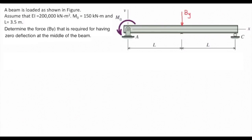Before watching this video, try to solve this problem. A beam is subjected to a moment at the left side and a force acting at the middle of that. The value of the moment at the left side is 150 kNm, and we need to see how much would be the required force at the middle of the beam to have zero deflection at that point.